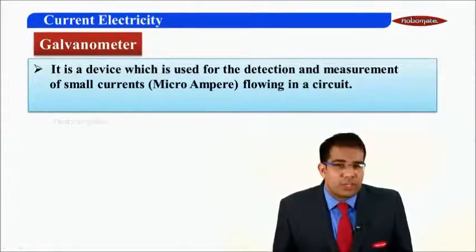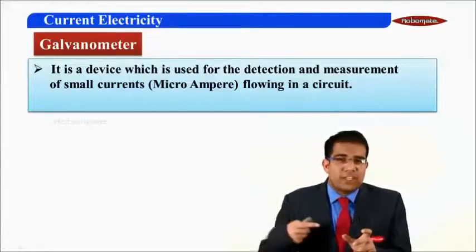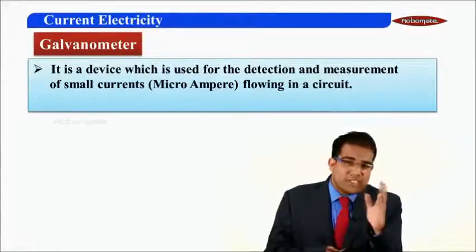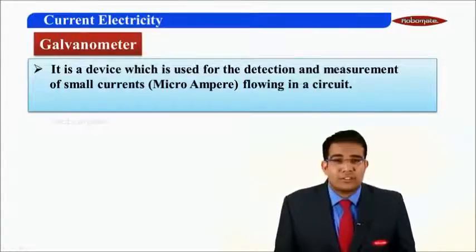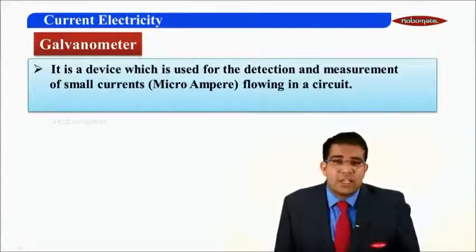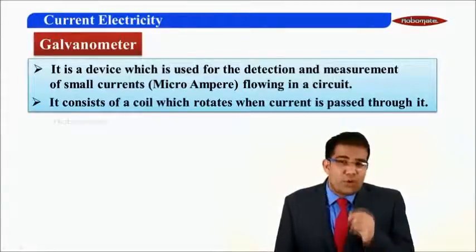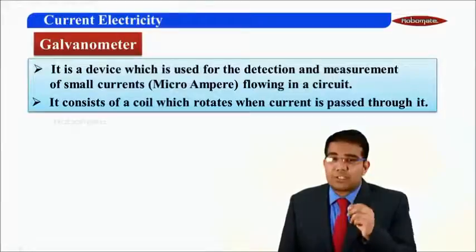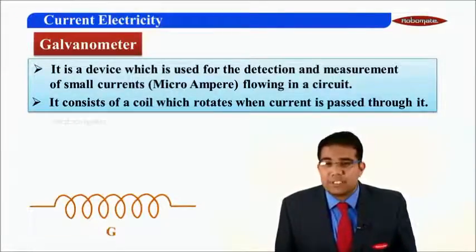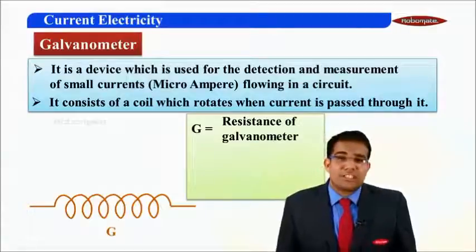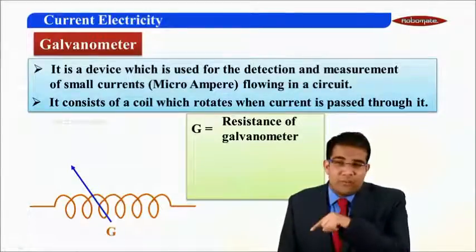You have already seen this instrument in your school laboratories. When current is passed through this galvanometer, there is some deflection in the needle that gives the actual reading of the current flowing in the circuit. It consists of a coil which rotates when current is passed through it. The coil has some resistance G, also called the resistance of the galvanometer.